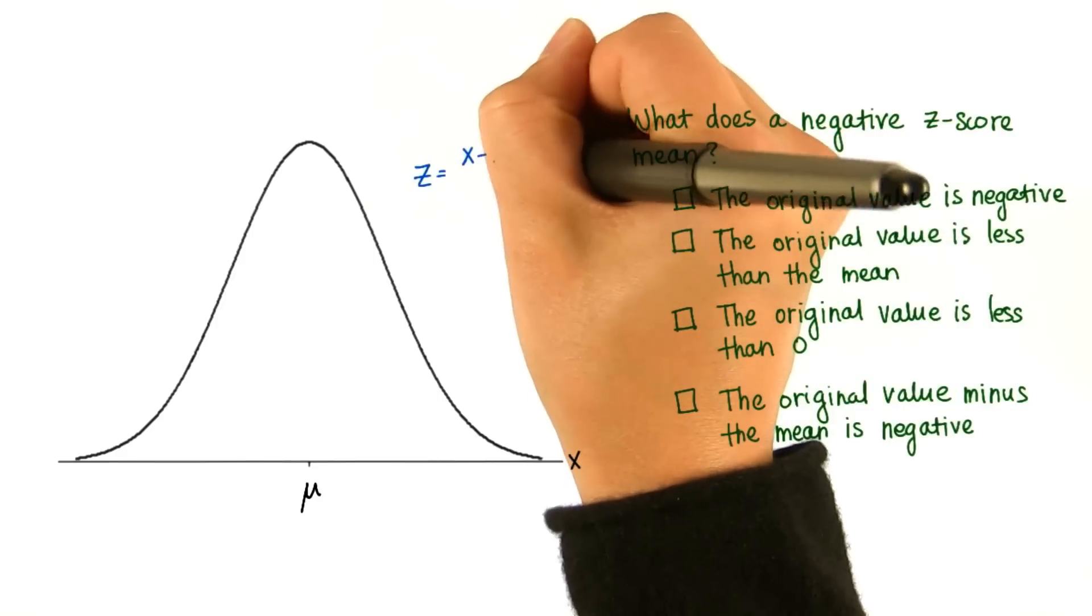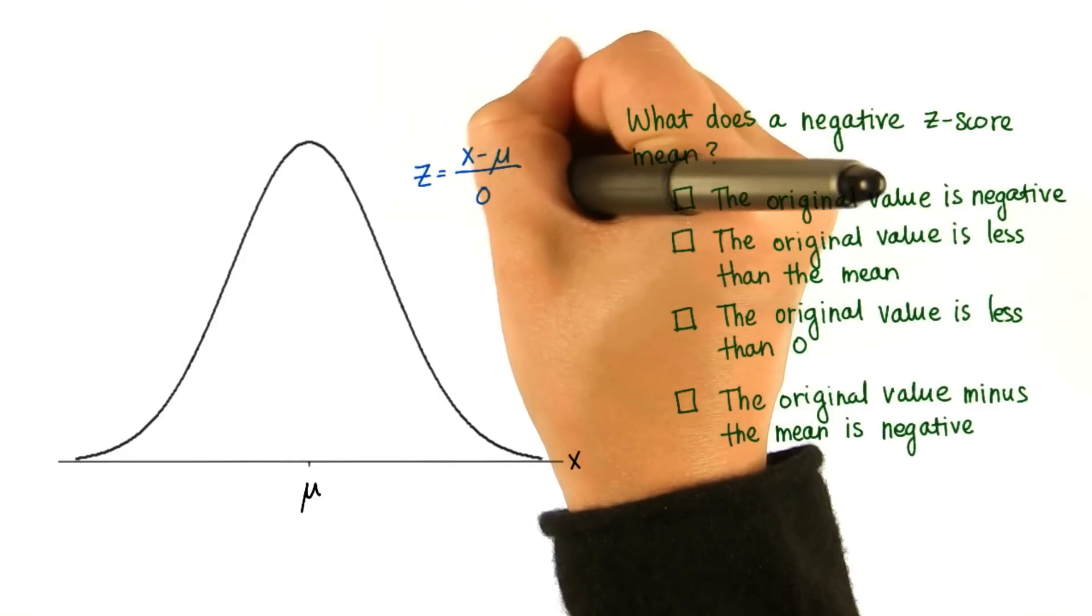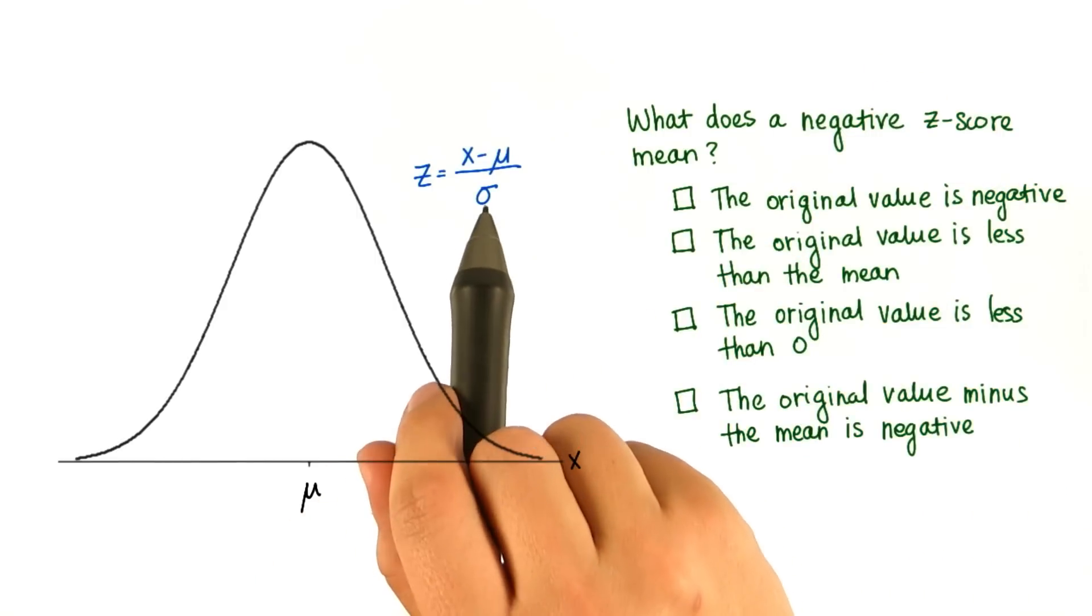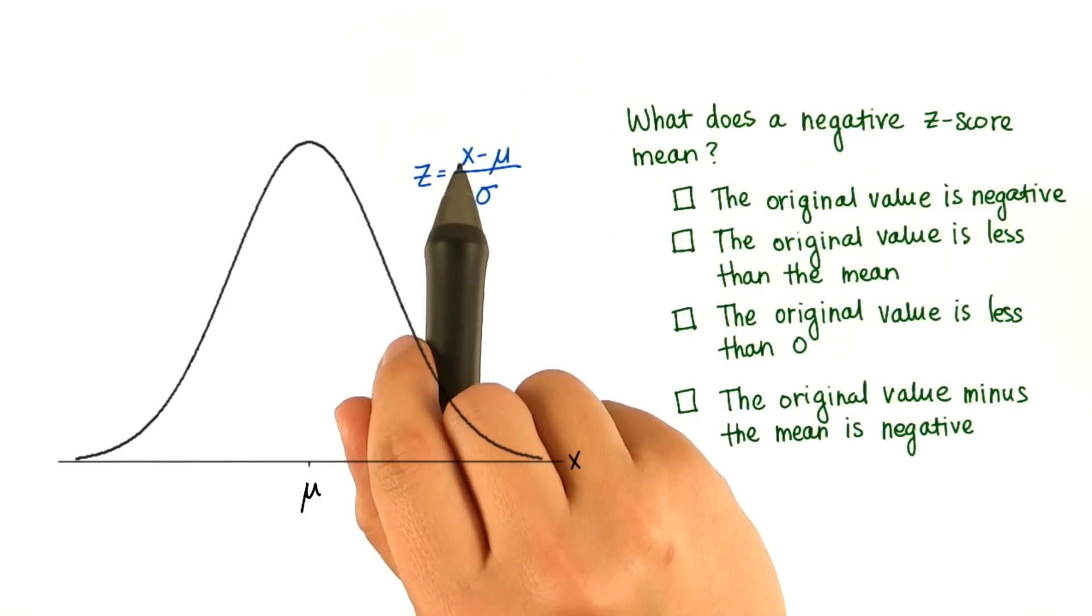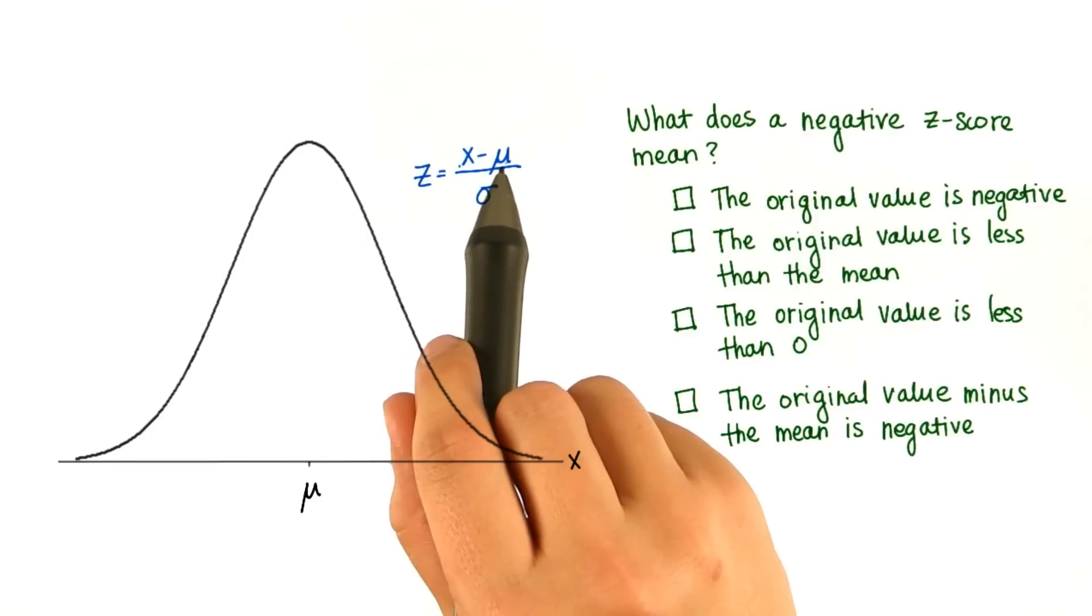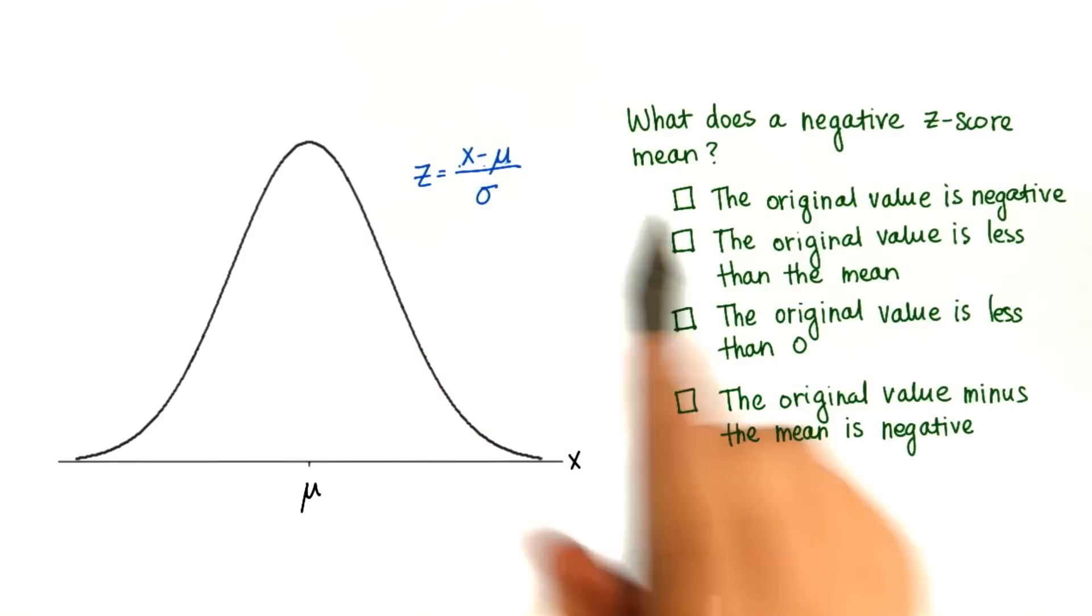Since z equals the original value minus the mean divided by standard deviation, in other words, the number of standard deviations that the original value is from the mean, then a negative z-score means that the mean is greater than x.